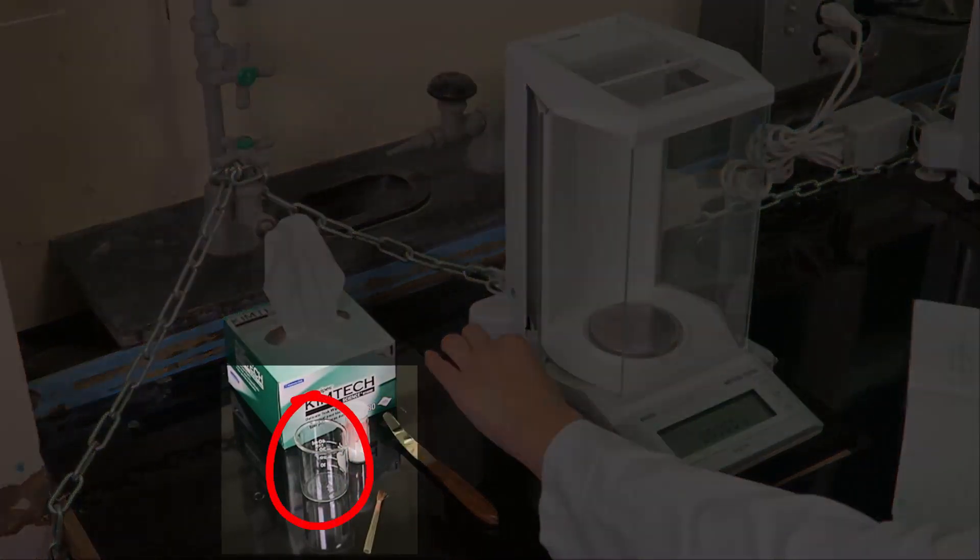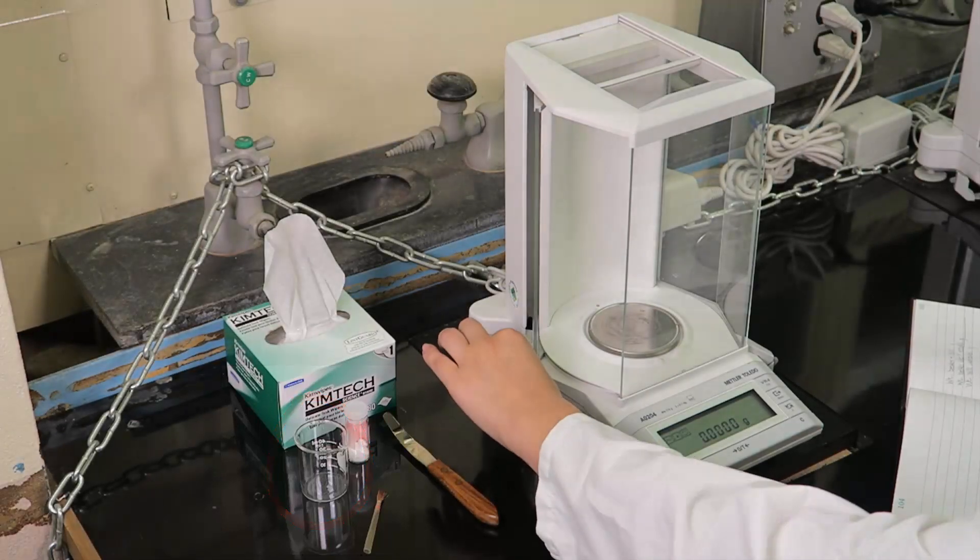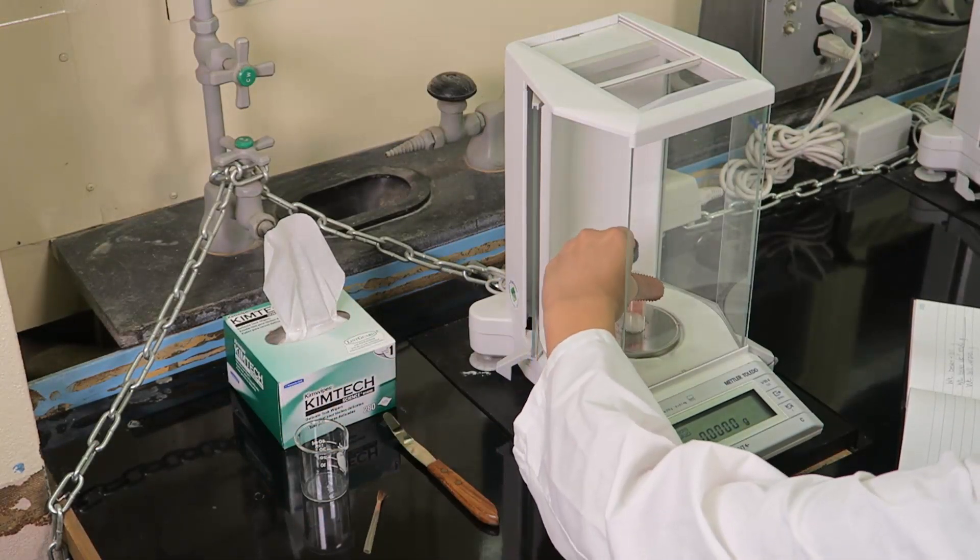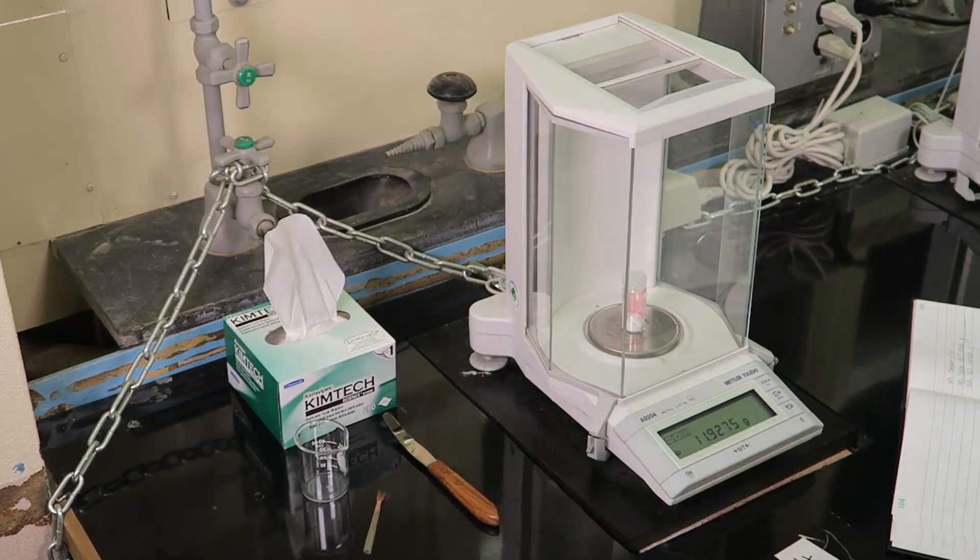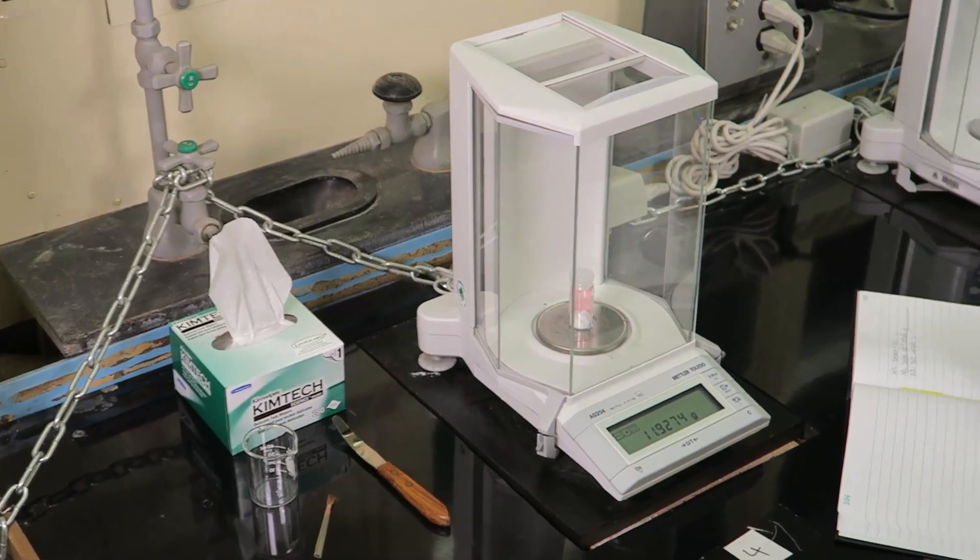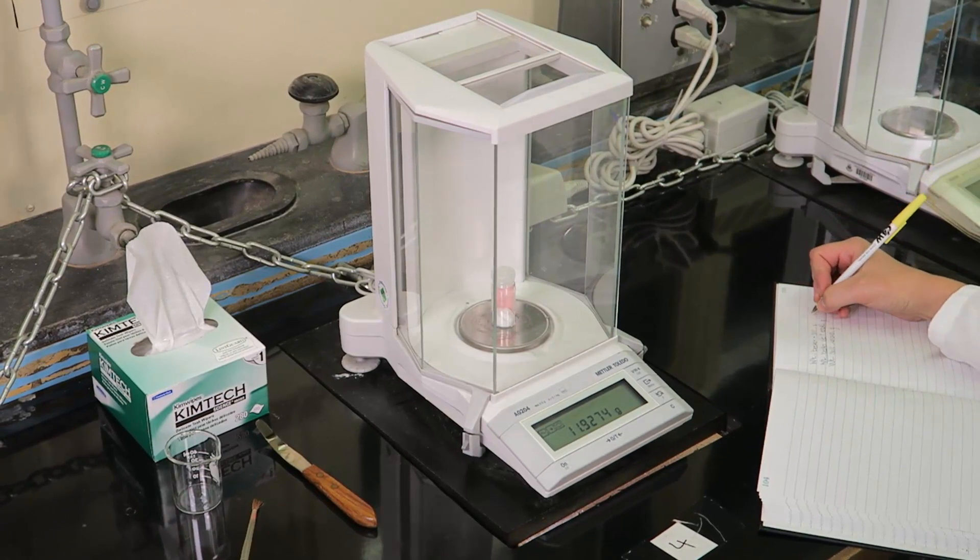Such care does not need to be taken with the beaker since it will not be weighed on the analytical balance or used to accurately determine mass. Place the container onto the center of the balance pan and gently close all the balance doors. Once a stable reading is reached, record the mass in a laboratory notebook.